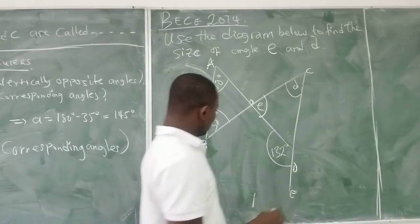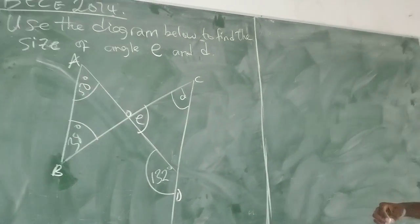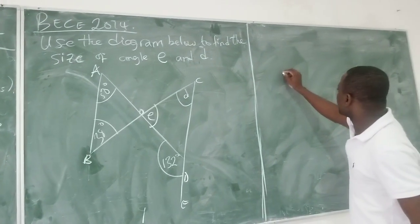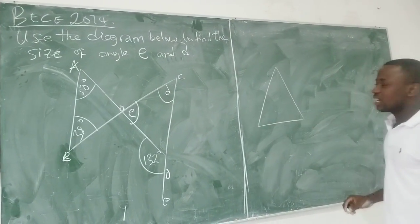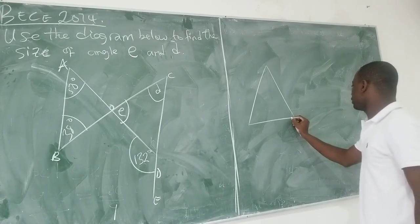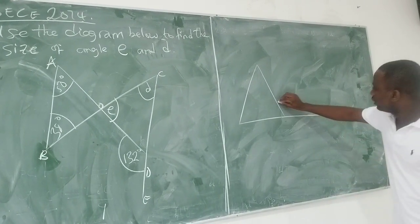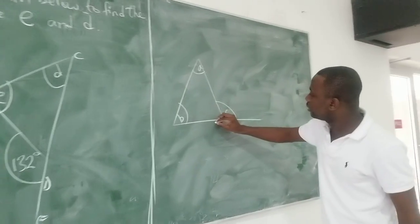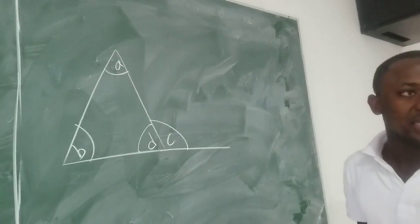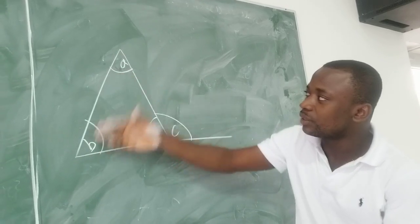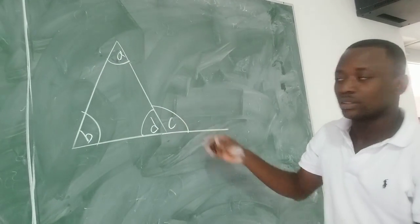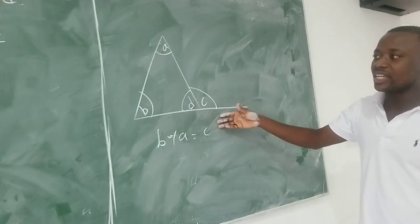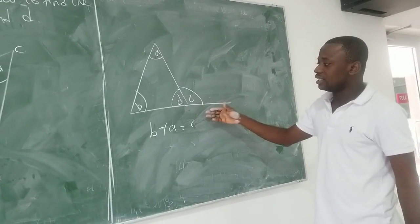Let me take you back to this illustration. One property we learned about angles of a triangle was that if I have a triangle, I can have an exterior line — that is an extension of the triangle. This angle we term as C; here is A, this is B, and here it's D. The sum of the two non-adjacent interior angles gives us the exterior angle, so B plus A is equal to C. We are going to use this idea to find the size of angle E.